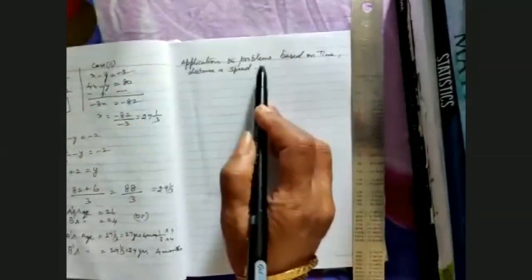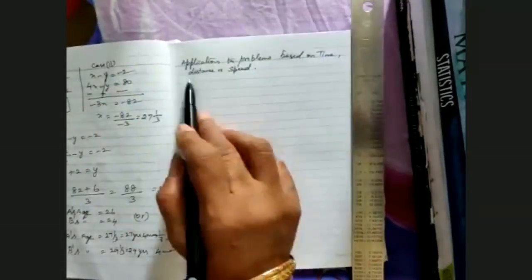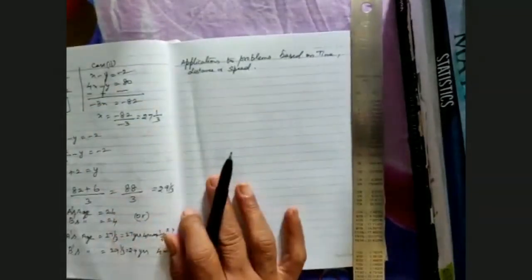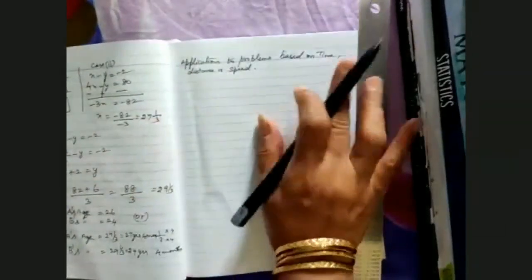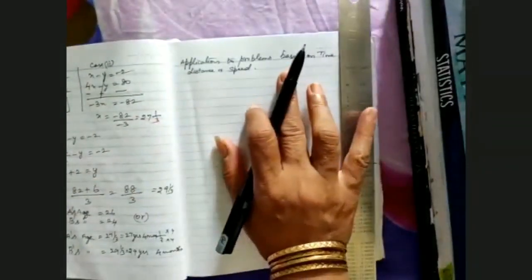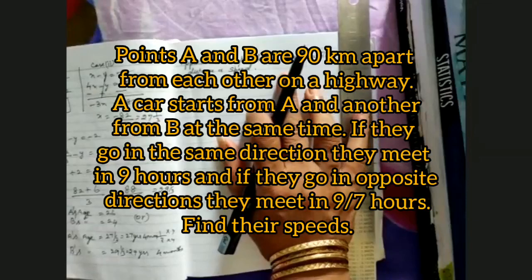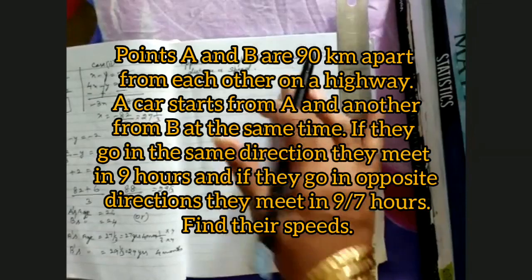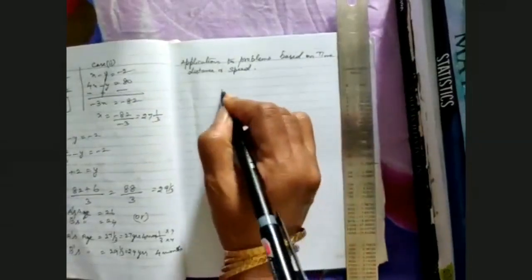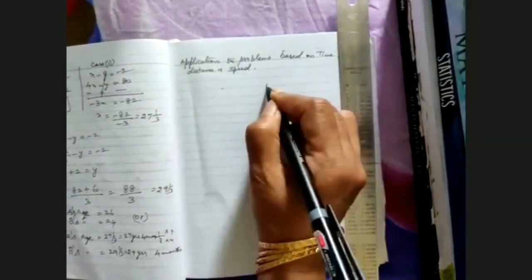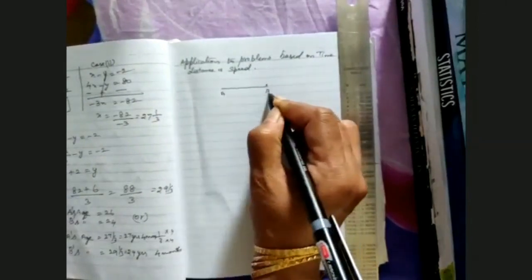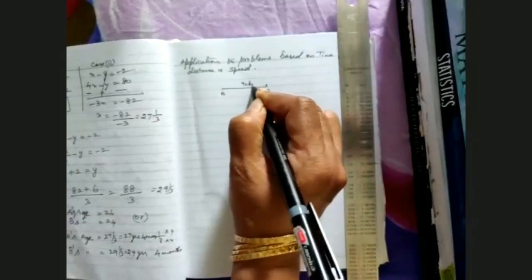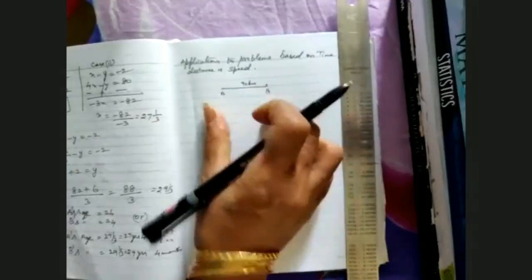Now we are going to discuss problems based on time, distance and speed — one more model. Points A and B are 90 km apart, so A and B are points with a distance of 90 km between them.